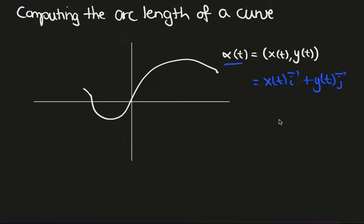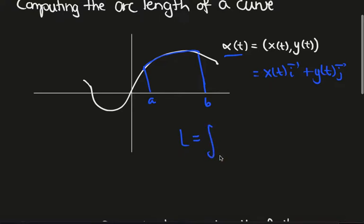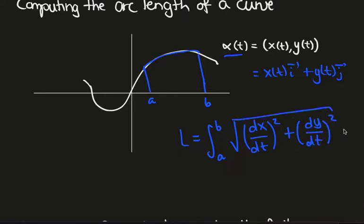The examples in this video are going to be for curves in R², but the same applies for curves in R³ and any dimension. So let's say we look at this curve α(t) between some initial time and some final time. We want to calculate the length of this region, then the formula we're going to use is L equals the integral from a to b of the square root of (dx/dt)² plus (dy/dt)² dt.